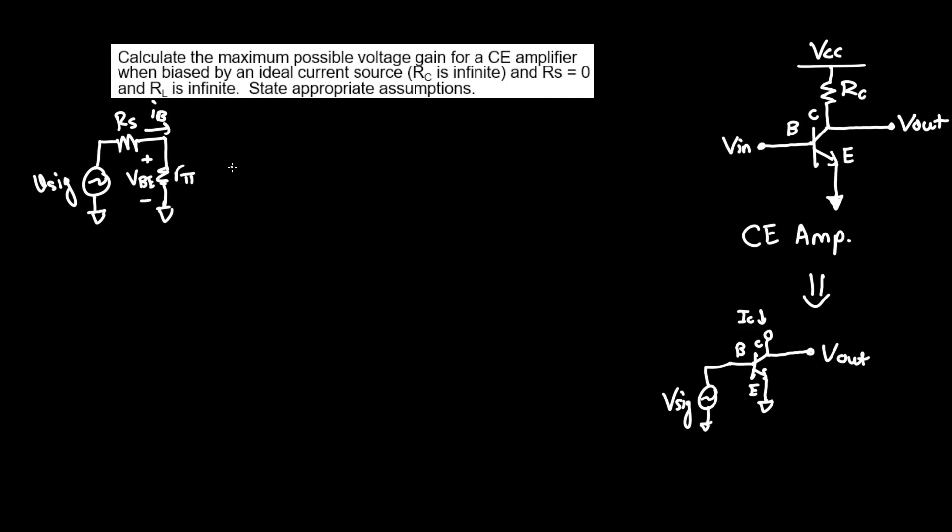and we know that current IB is going through it. Now we know that there will, of course, as always be a dependent current source, put that to ground, pointing downwards. This term is known as, as always, Gm Vbe. Or you can also call it beta IB, if you want, if you're more familiar with that. Continuing on, we have RO, which is another internal resistance that is found near the collector.